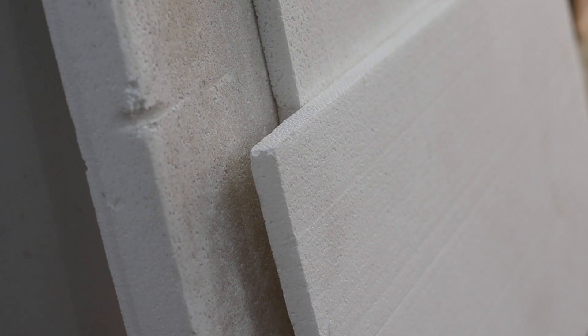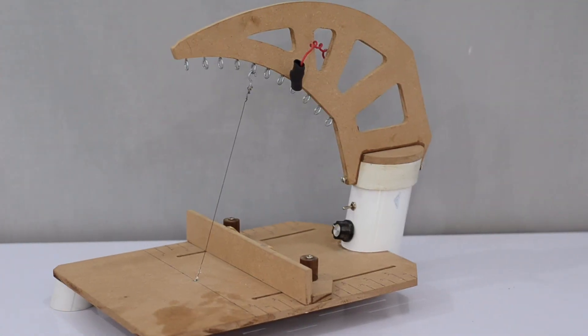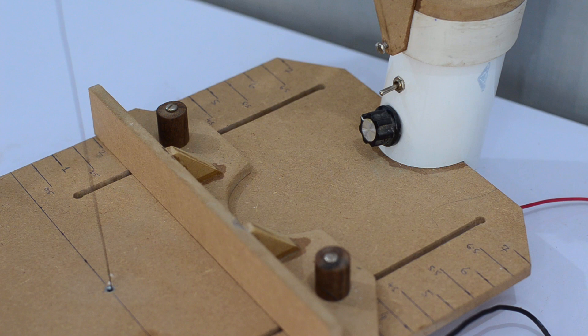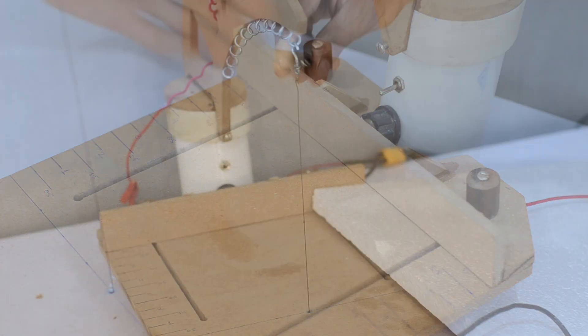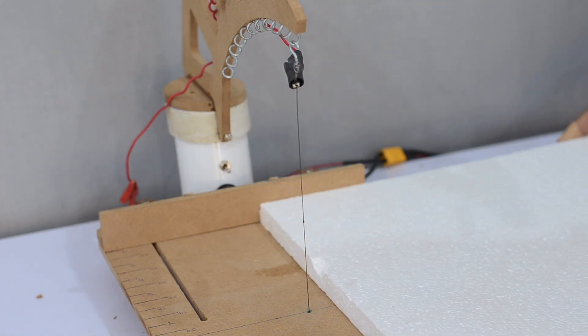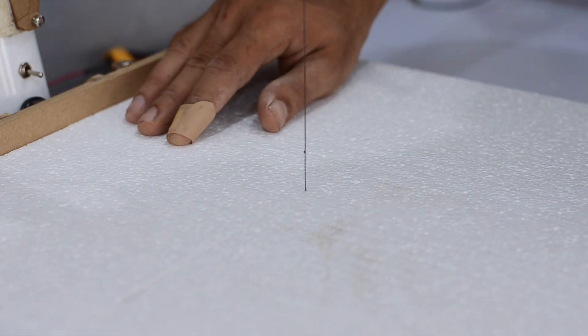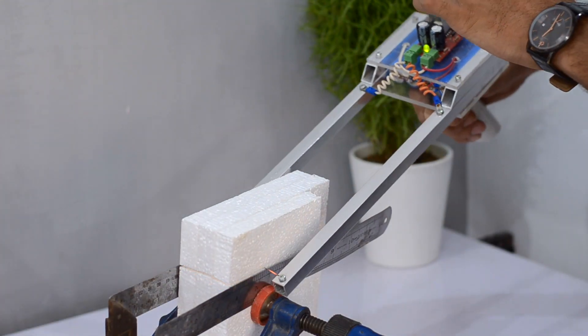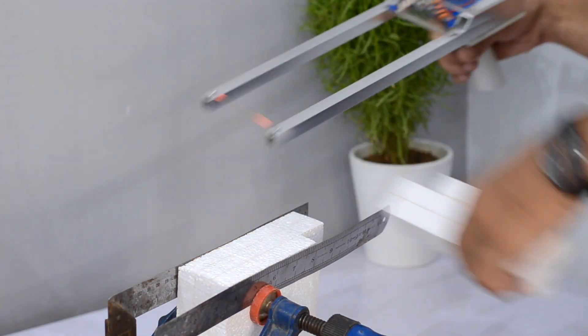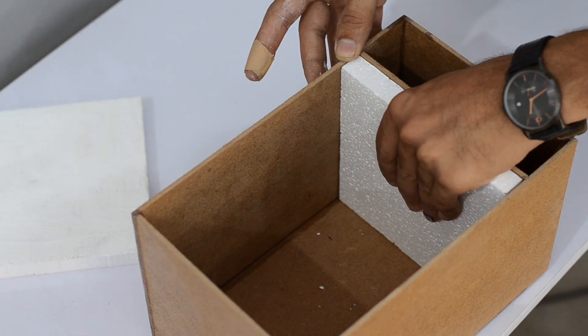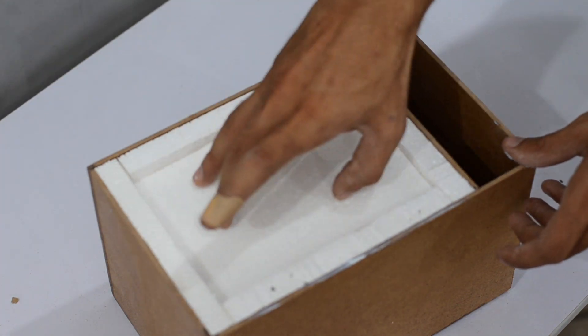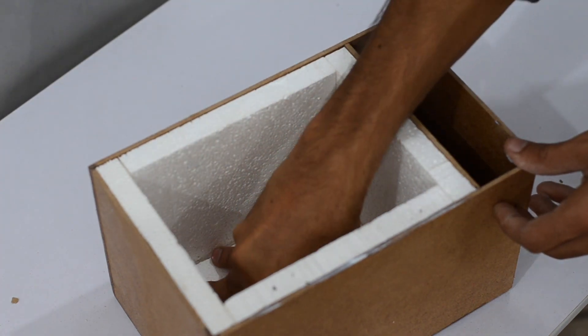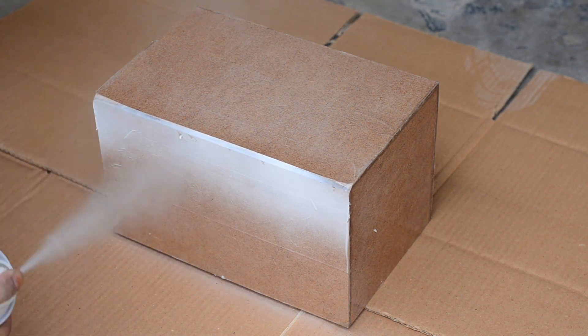The insulation for this deep freezer is made using packing foam sheets. The sheets were cut to size using my homemade foam cutting tools. All the pieces were then glued to the inner side of the enclosure. The enclosure is painted white using some spray paint.